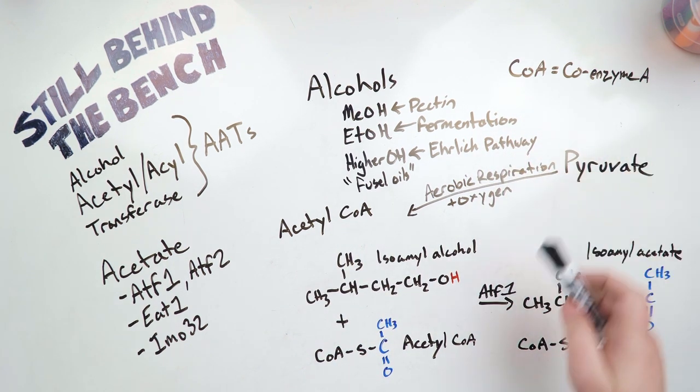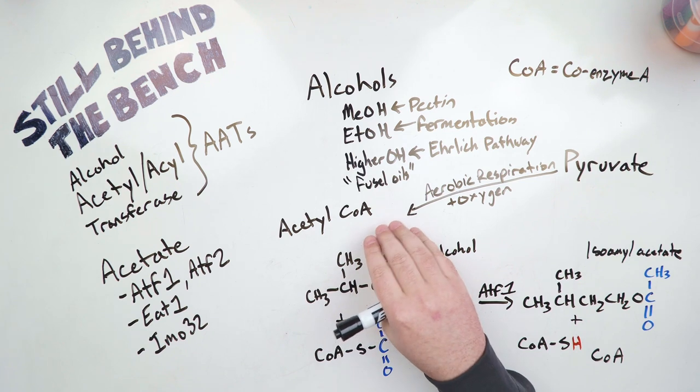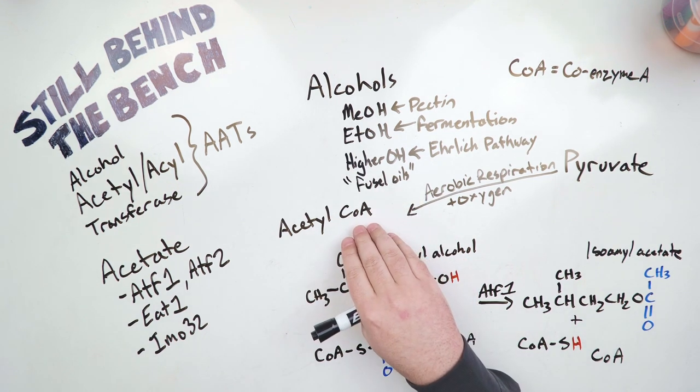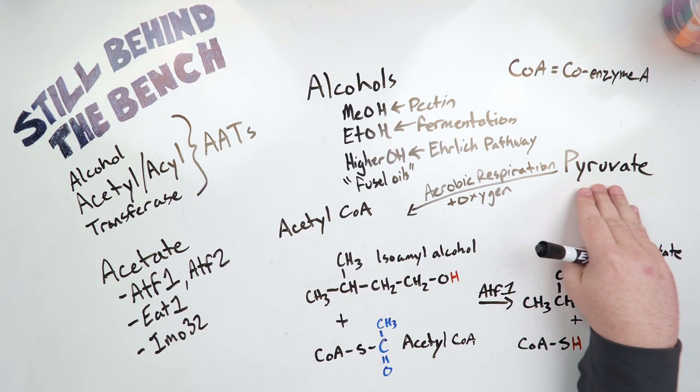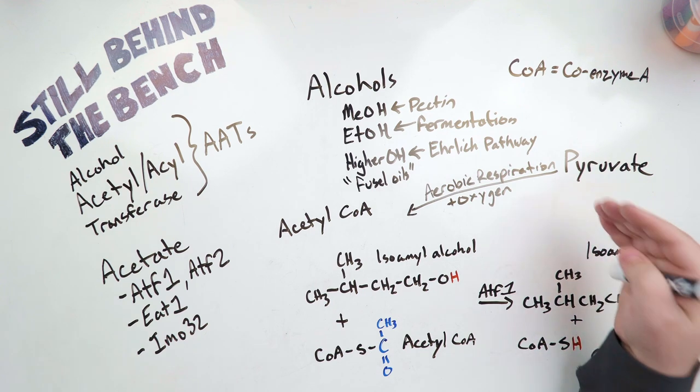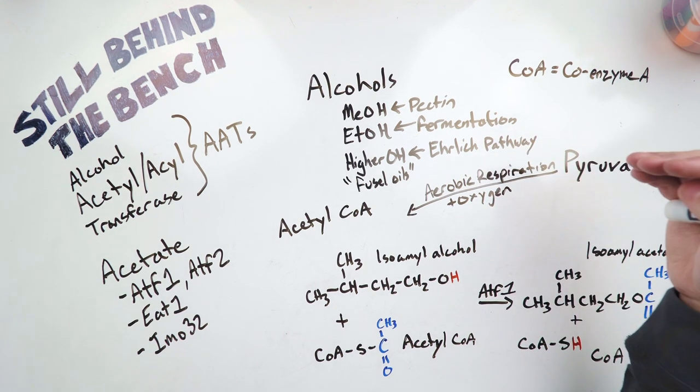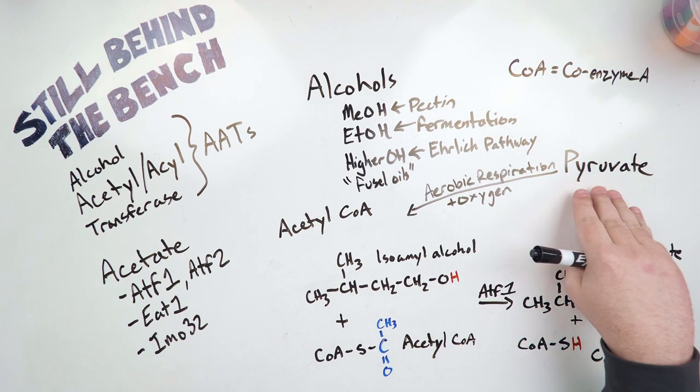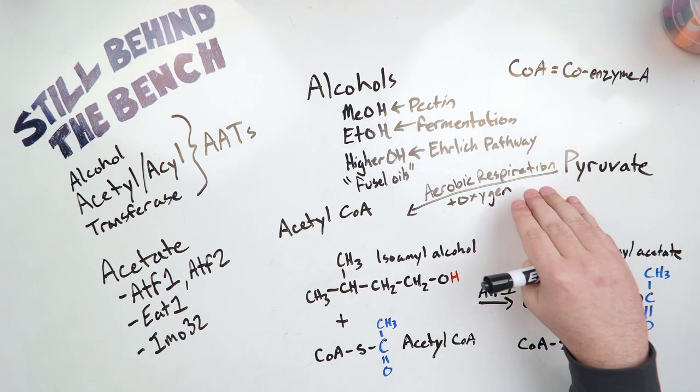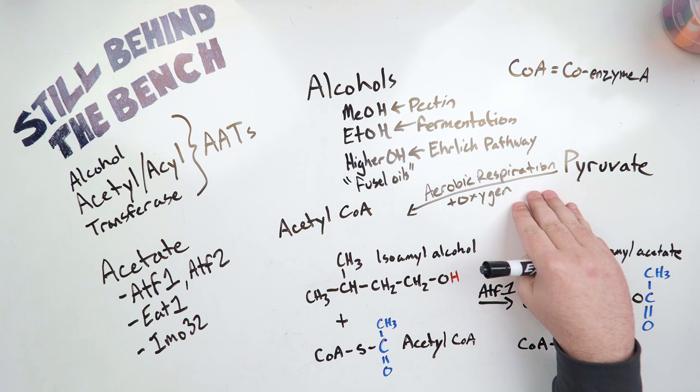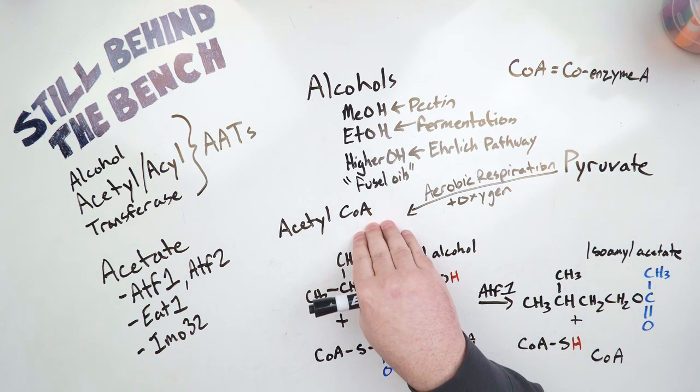So the CoA stands for coenzyme A. It's a very complex molecule, so I'm not going to get into too much detail about it, but it is produced by pyruvate, just like how ethanol is derived from pyruvate. So the yeast eats the sugar, the sugar goes into the glycolytic pathway, pyruvate pops out of that pathway.